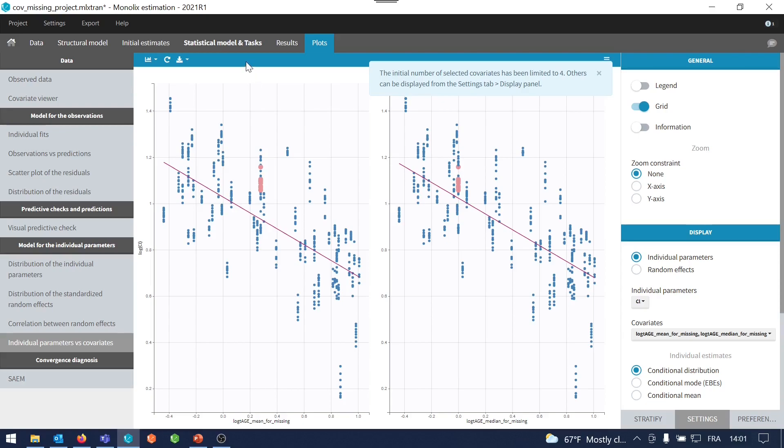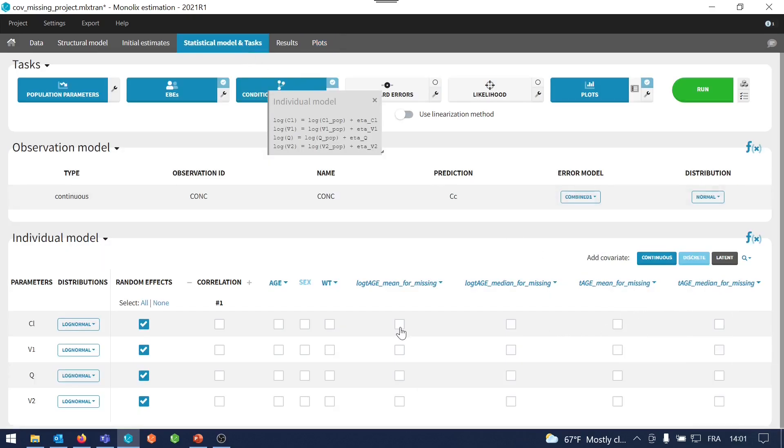As a next step, I will try different models using one or the other covariates to include the covariate effect of age on the clearance. And I would compare these models in psychomore. Note that all this can be done without changing the dataset.